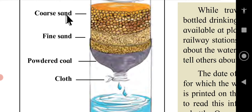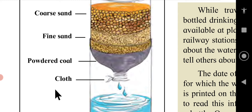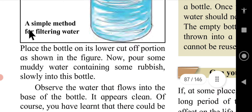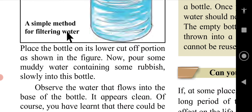The layers from top to bottom are: coarse sand, fine sand, powdered coal, and cloth. This is a simple method for filtering water.